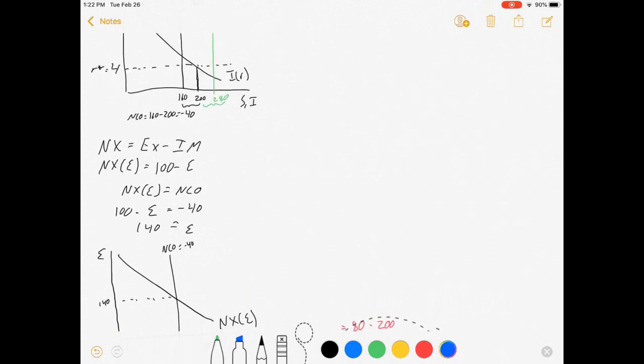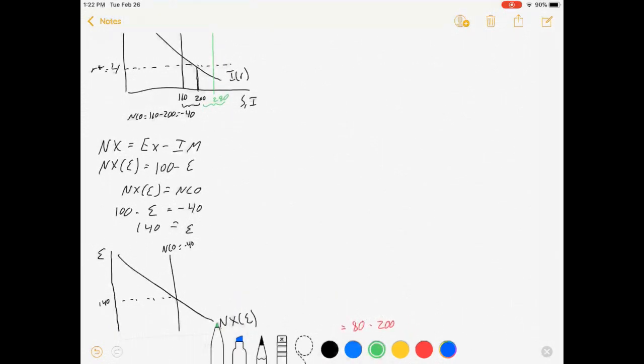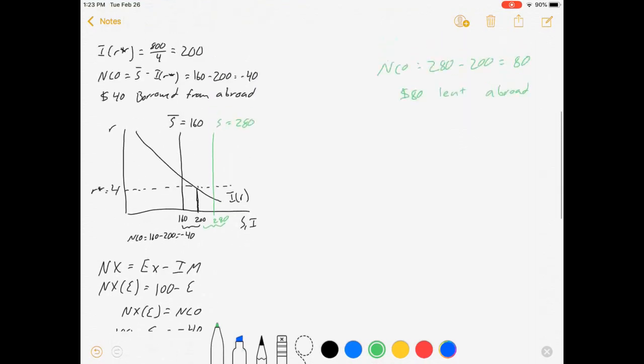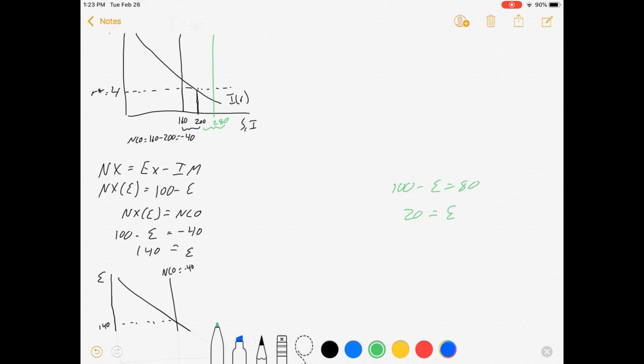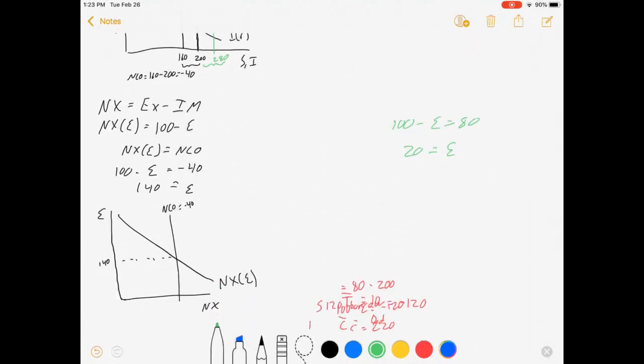What does that look like on this graph? That's basically increasing savings like this. So S equals 280. And now we've got more savings than investment, and that gap is a positive net capital outflow.